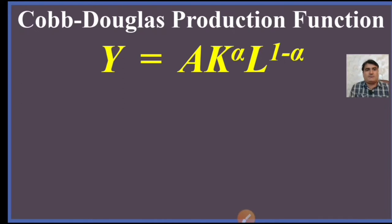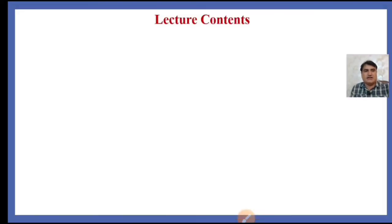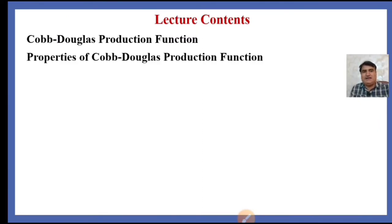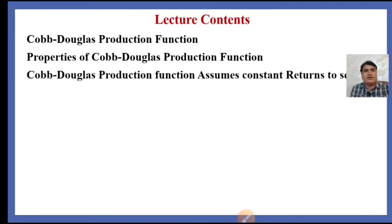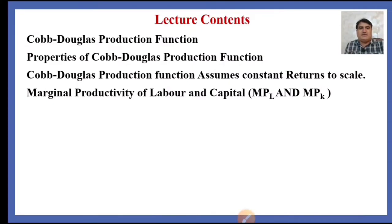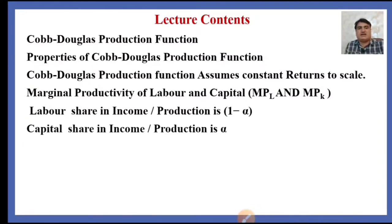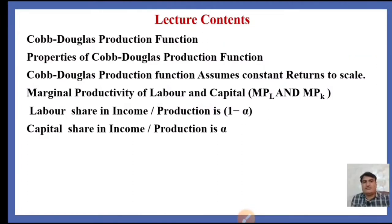The general form of Cobb-Douglas production is y = A * K^alpha * L^(1-alpha). In this lecture, we shall talk about what is the Cobb-Douglas production function, what are its properties, how it assumes constant returns to scale, what is the marginal productivity of labor and capital, how the labor share in income equals 1 minus alpha, and how the capital share in income is alpha. This is our lecture plan.